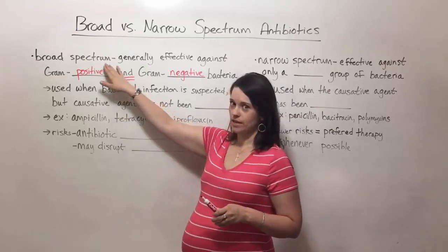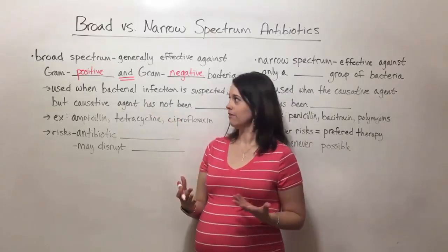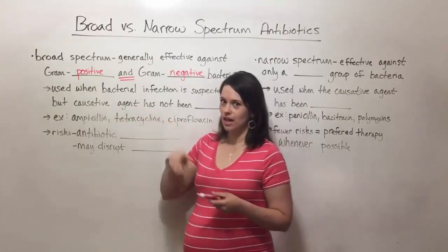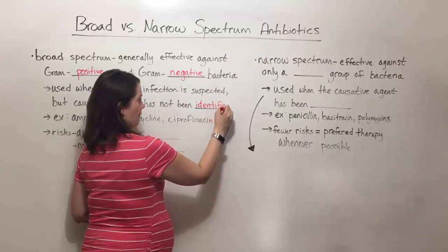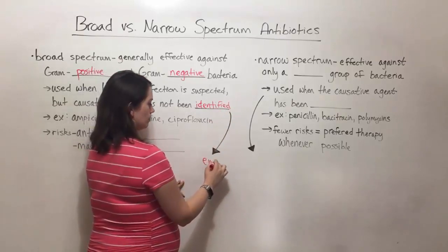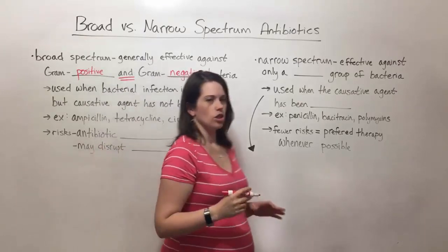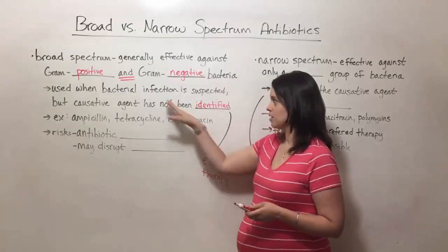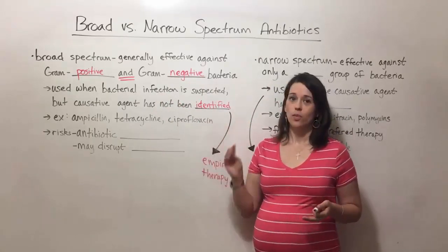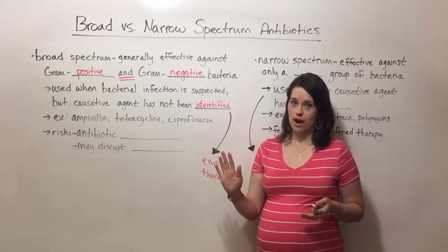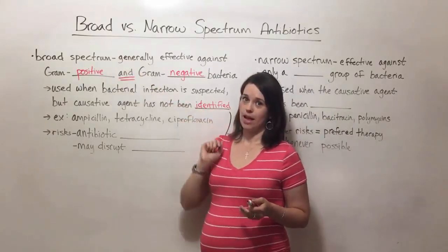Broad-spectrum antibiotics are used when it's been determined that a patient has a bacterial infection but the causative agent has not been specifically identified. This is what we call empiric therapy. A doctor has determined the patient has a bacterial infection, doesn't know exactly what kind of bacteria is causing it, and the symptoms are severe enough that treatment is needed immediately — we don't have time to identify the infection, we've got to treat it now.